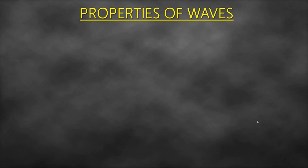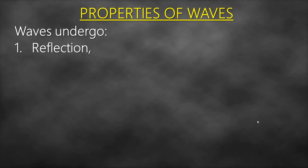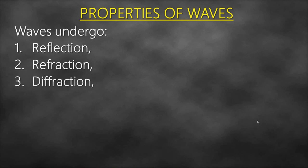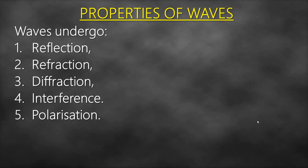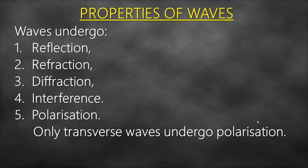Our interest today is going to be about the properties of waves. The common properties of waves include: number one, reflection; number two, refraction; number three, diffraction; and number four, interference. There is a fifth one called polarization, but this one is studied in detail at A-level. Only transverse waves undergo polarization — longitudinal waves don't.